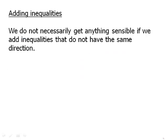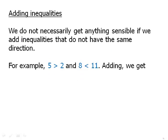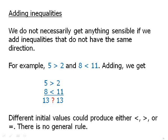We do not necessarily get anything sensible if we add inequalities that do not have the same direction. For example, these two inequalities, now we flip one around so they have opposite direction. Adding these, well, what happens? We get 13 on both sides. And in fact, that's not an inequality at all. That's in fact an equation. And if we pick different initial values, we could produce a sum that would either be greater than, less than, or equal to. And so it means that there's no general rule. When you start adding inequalities where the sign is pointing in opposite directions, basically you get mathematical nonsense. There's no way to predict what you're going to get.